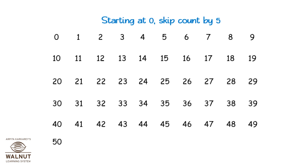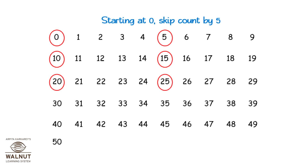Starting at zero, skip count by five: zero, five, ten, fifteen, twenty, twenty-five, thirty, thirty-five, forty, forty-five, and fifty.